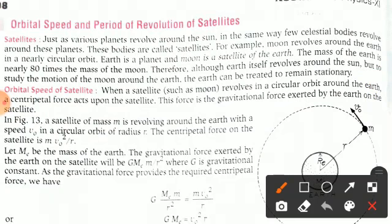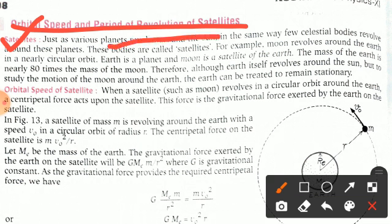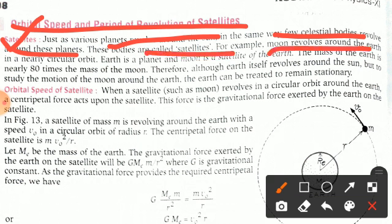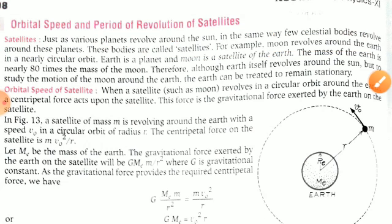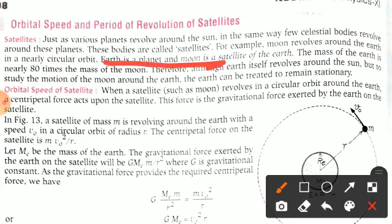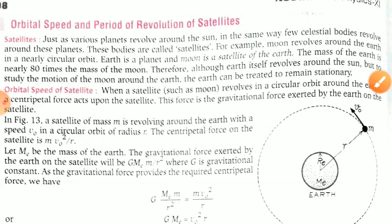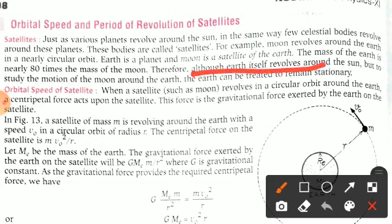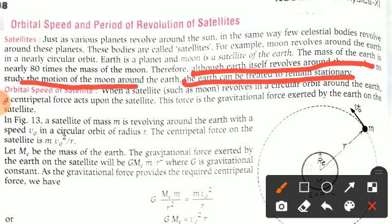Now this is the important topic: orbital speed and period of revolution of satellites. Just as various planets revolve around the sun, in the same way celestial — meaning heavenly — bodies revolve around these planets, and these bodies are called satellites. For example, the moon revolves around the earth in a nearly circular orbit. The mass of the earth is nearly 80 times the mass of the moon, so although earth itself revolves around the sun, to study the motion of the moon around earth, the earth can be treated as remaining stationary.